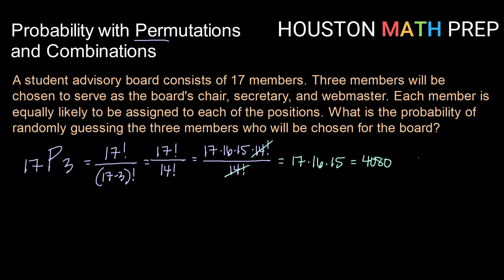Now, what is the probability of randomly guessing the three members who will be chosen if each member is equally likely to be assigned to those positions? You get one guess, so there will be one correct outcome out of 4,080 possible outcomes. The probability of guessing correctly is pretty low — it's one out of 4,080.